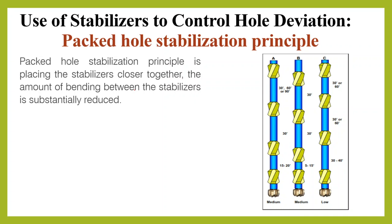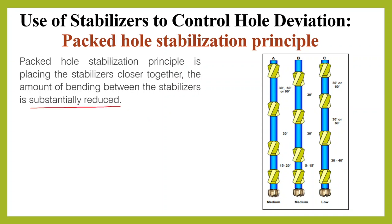What is packed hole stabilization principle? It is placing the stabilizers closer together so that the amount of bending between the stabilizers is substantially reduced. This increases the stiffness of the BHA by adding stabilizers to keep the drill string from bending or bowing, and forces the bit to drill straight ahead.